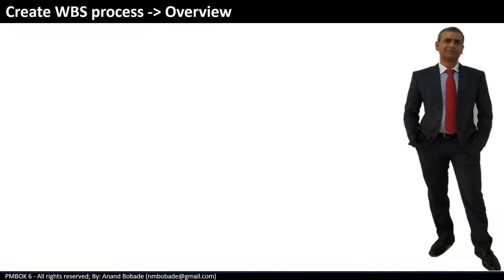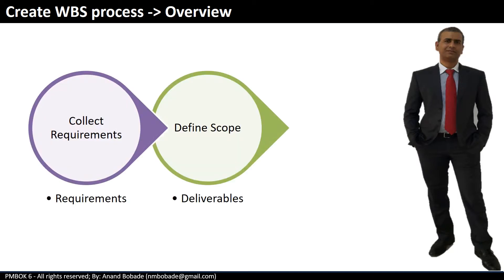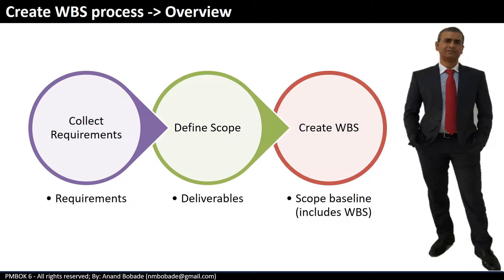In a previous session we saw two processes — collect requirements and define scope — before we create the WBS process. What is the relationship of requirements, deliverables and WBS, which are outputs of these three processes? Requirements are input to build the deliverables. Deliverables will be listed in the project scope document, which is the output of the define scope process. These deliverables will be divided and subdivided into smaller, more manageable packages, which results in the WBS.